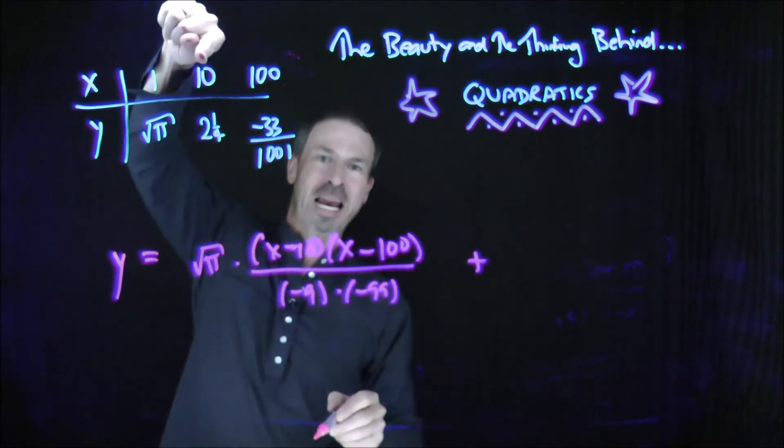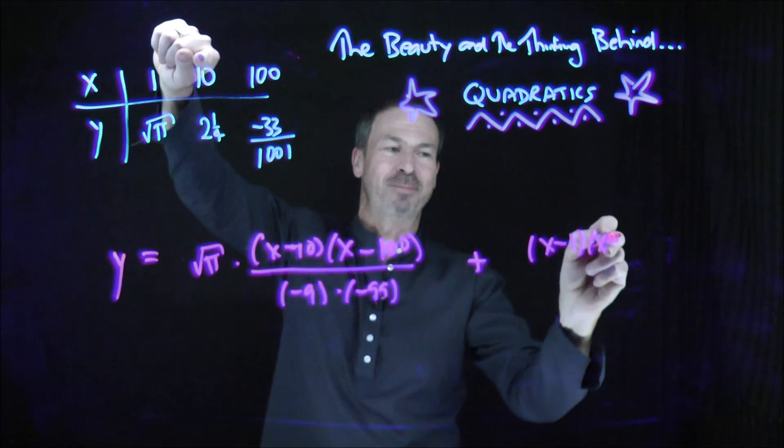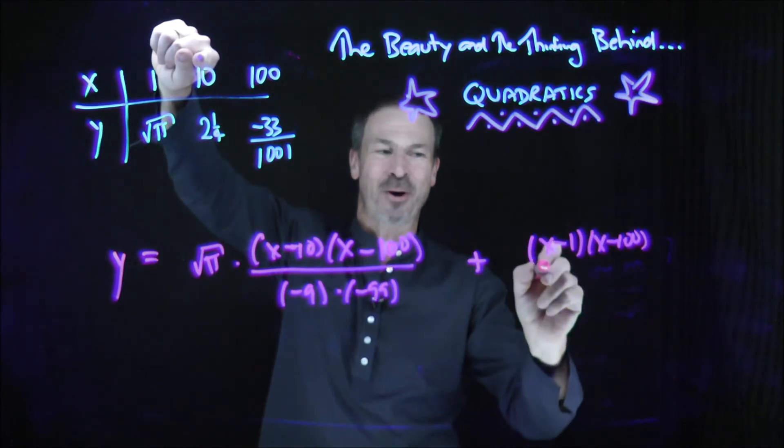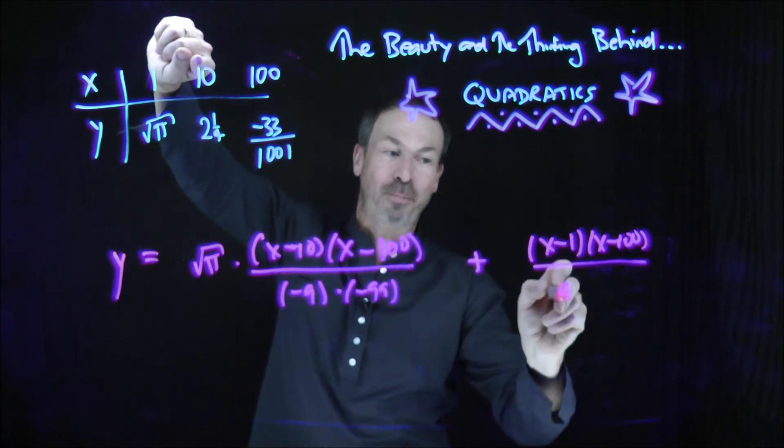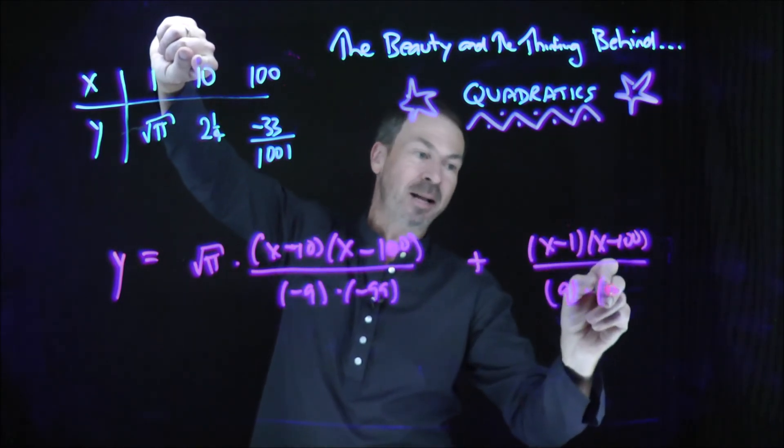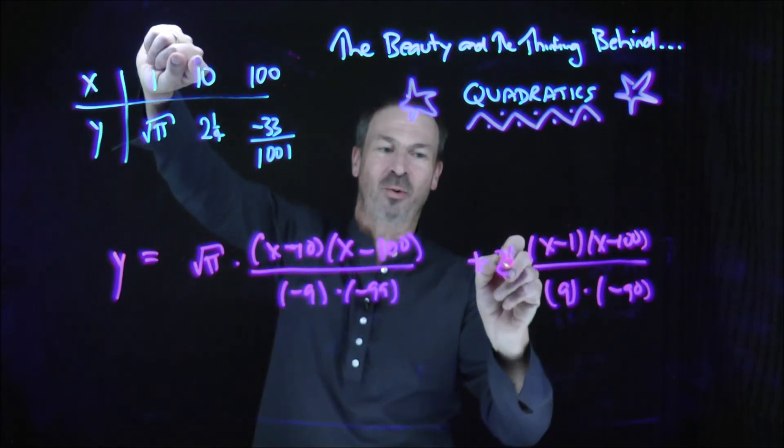Now I want a second term for the 10, but I want to vanish at x equals 1 and x equals 100. x minus 1, x minus 100. That will make that work. When I actually put in 10, I want a denominator to counteract the numerator. I actually put in 10, I want negative 90 on the bottom. 9 times negative 90. And I want 2 and a quarter out front.